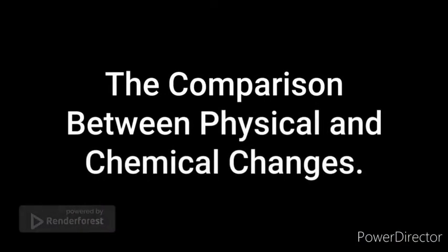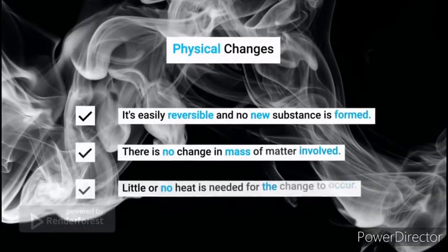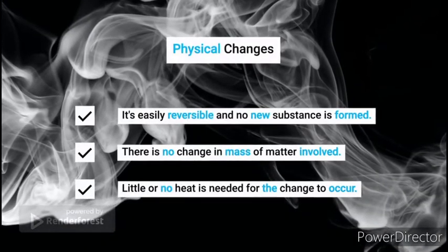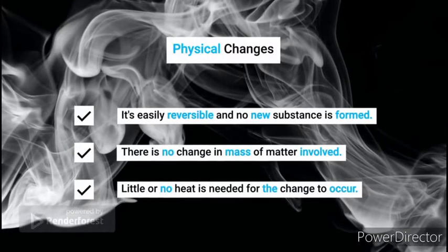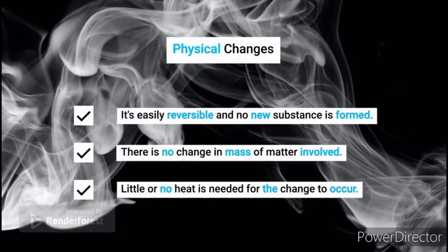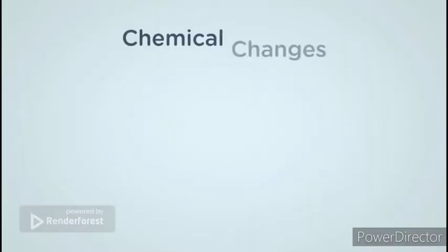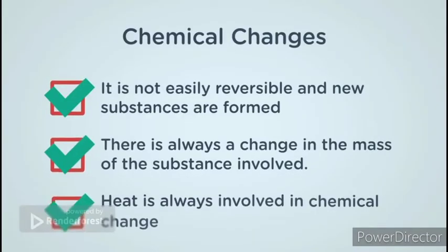Now let's compare physical and chemical change. Physical change is easily reversible and no new substance is formed. There is no change in the mass of matter involved, and little or no heat is needed for the change to occur. In chemical change, it is not easily reversible and new substances are formed. There is also a change in the mass of substance, and heat is always involved in chemical change.